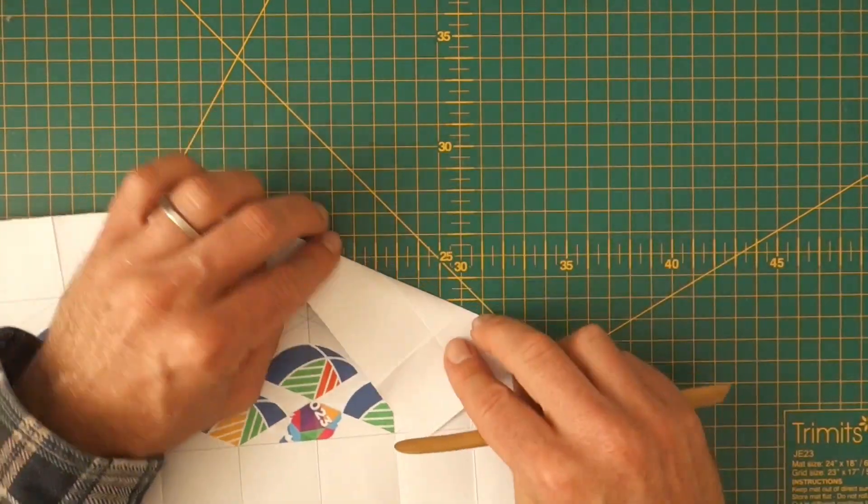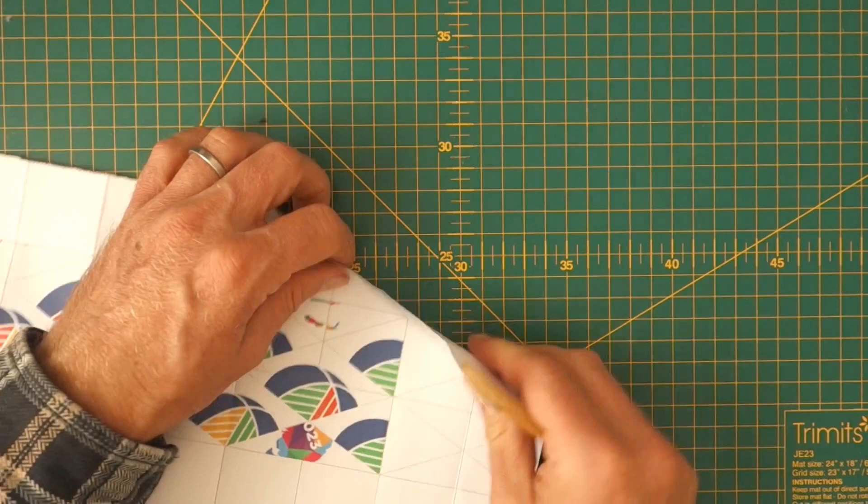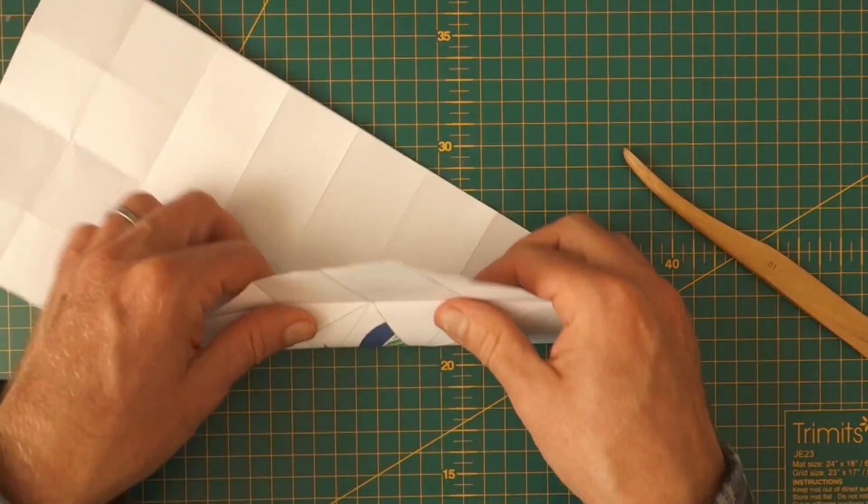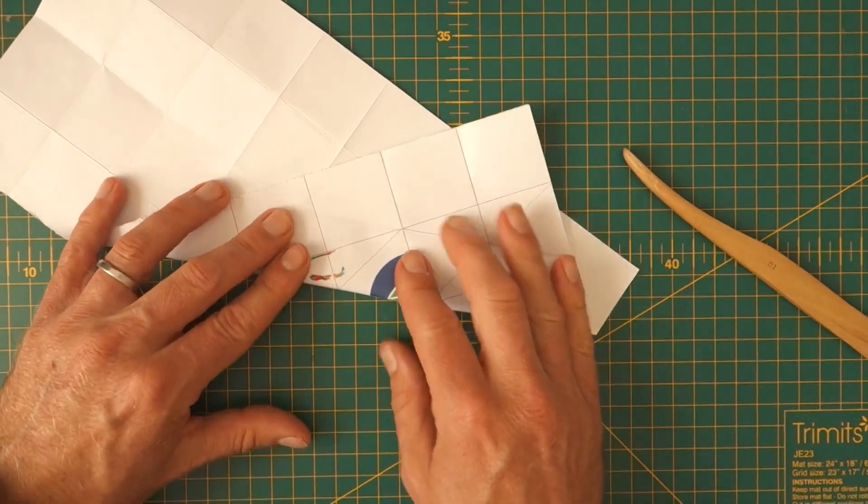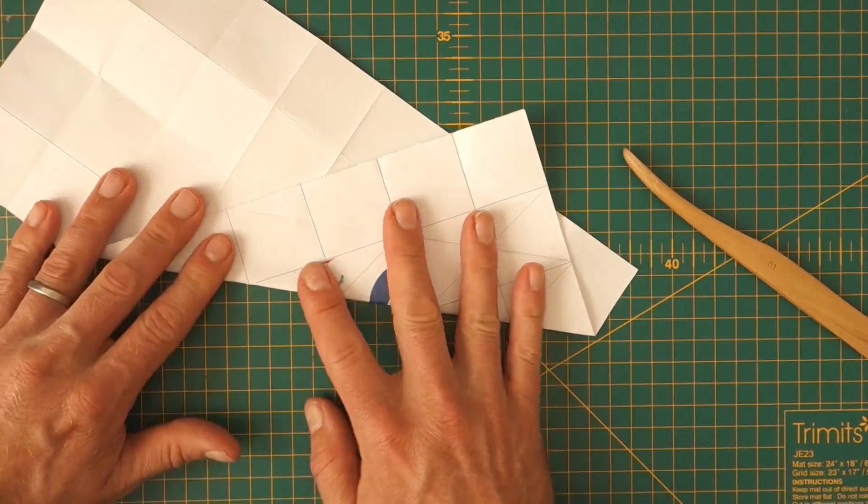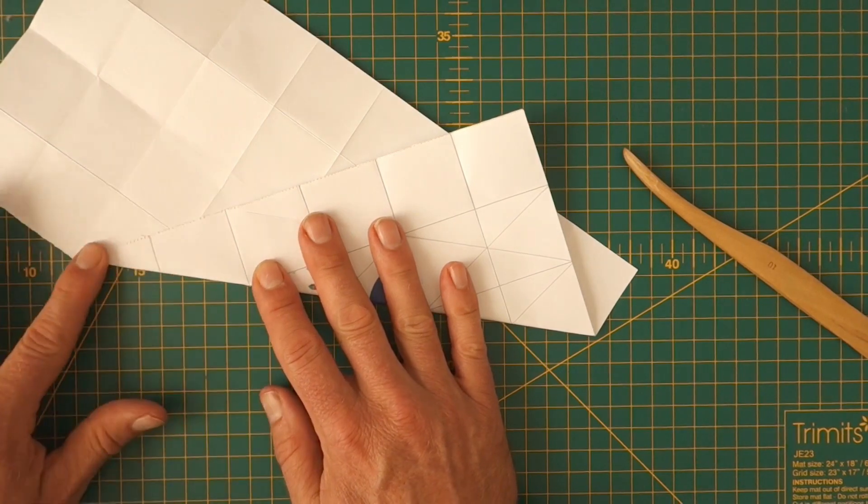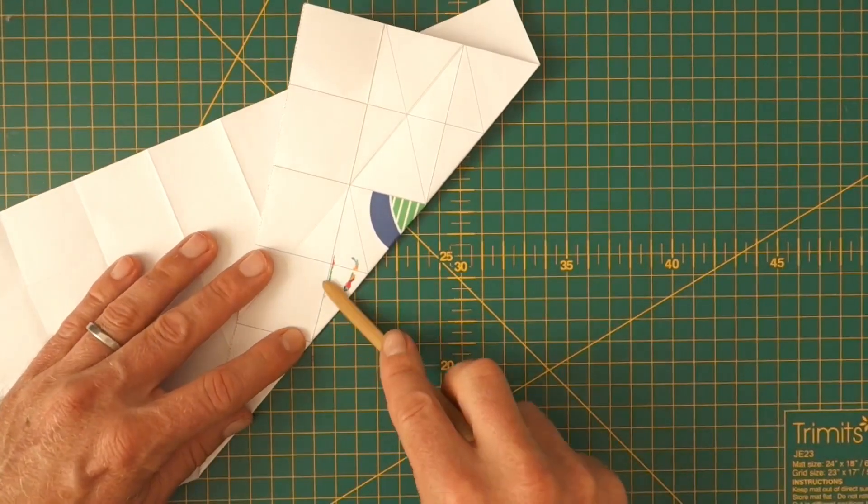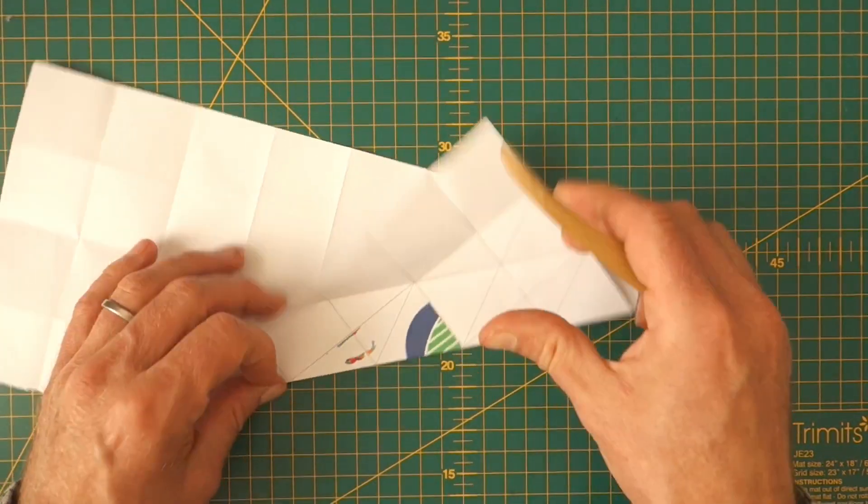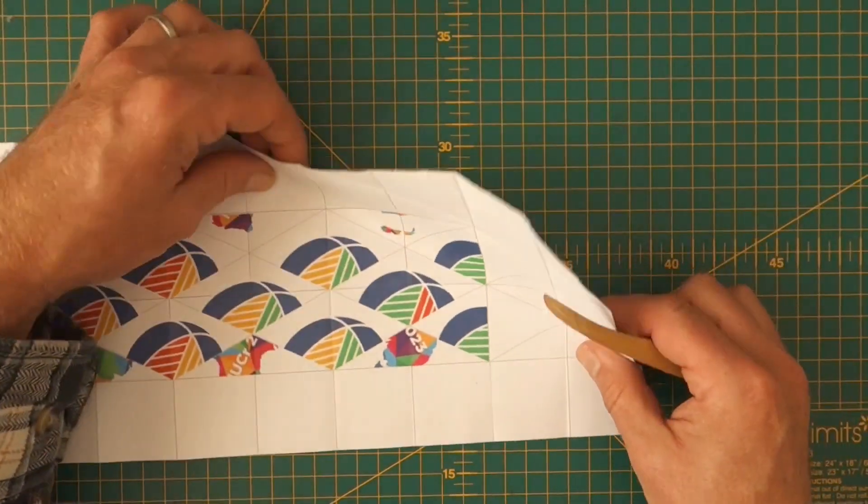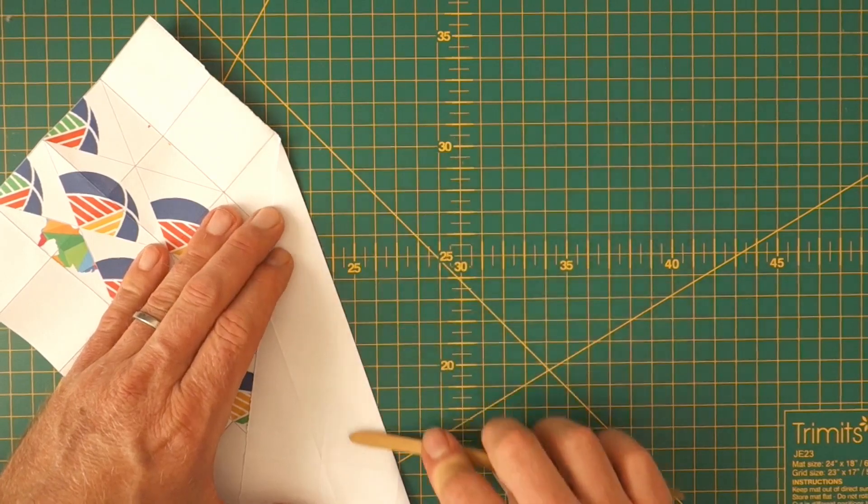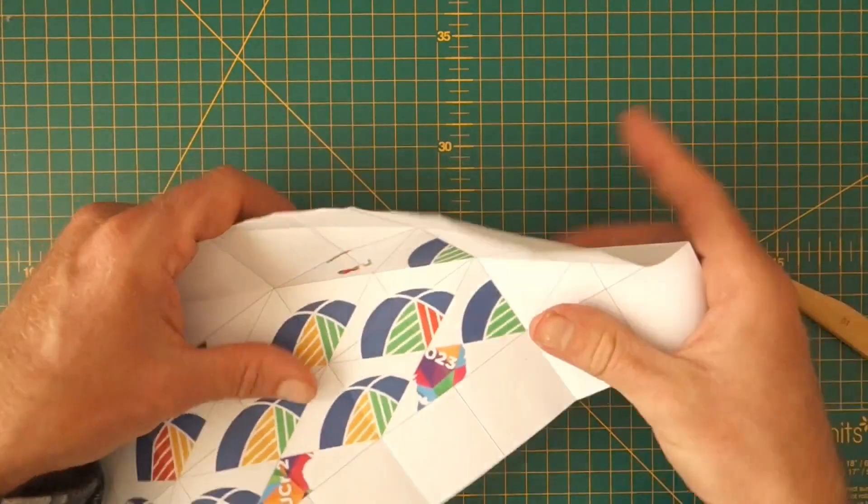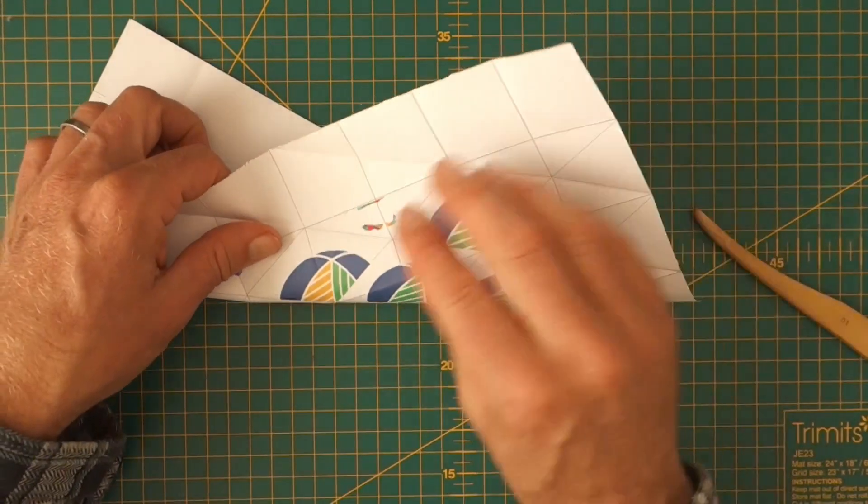And turn them over as well to the other side. Number one. Then we have number two. So these are quite important. They have to be done reasonably well. Otherwise the whole thing won't work. And the other side. And the third one.